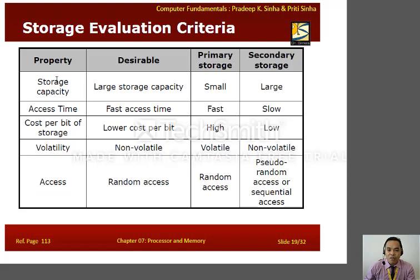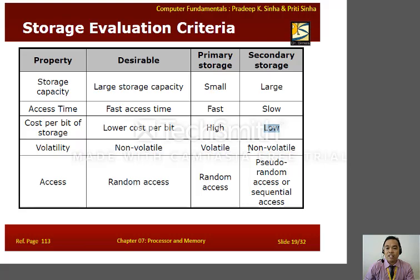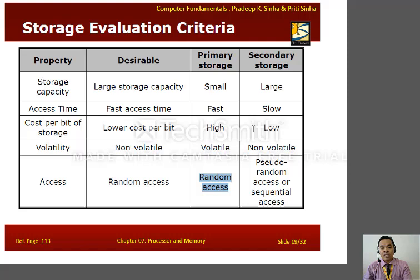Here are the differences between primary storage and secondary storage. In terms of storage capacity, primary storage is small while secondary storage is large. In terms of access time, primary storage is fast while secondary storage is slow. In terms of cost per bit, primary is high while secondary is low. In terms of volatility, primary is volatile while secondary storage is not volatile — no power supply is needed and data will not be lost. In terms of access method, primary uses random access while secondary uses pseudo-random or sequential access.